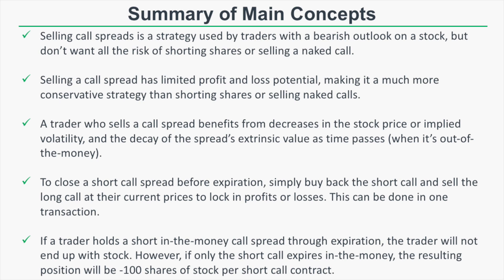A trader who sells a call spread benefits from decreases in the stock price or implied volatility, and from the decay of the spread's extrinsic value as time passes when it's out of the money. If you sell an out-of-the-money call spread, you have more than one way to make money, so the probability of profit is generally greater than 50%. To close a short call spread before expiration, simply buy back the short call and sell the long call at their current prices to lock in profits or losses — this can be done in one transaction.